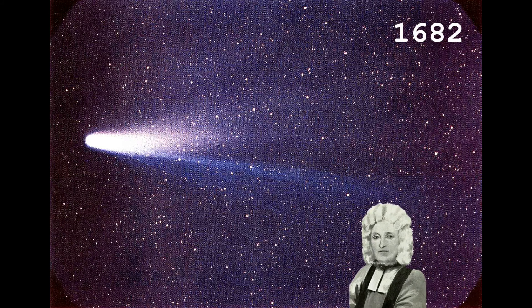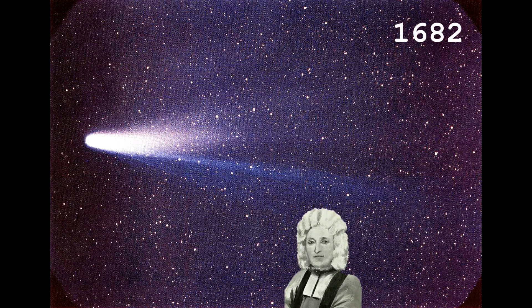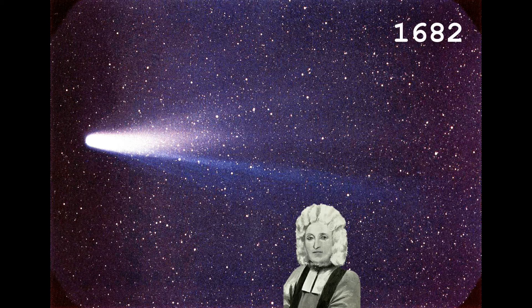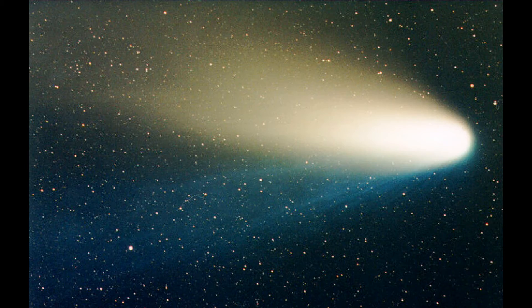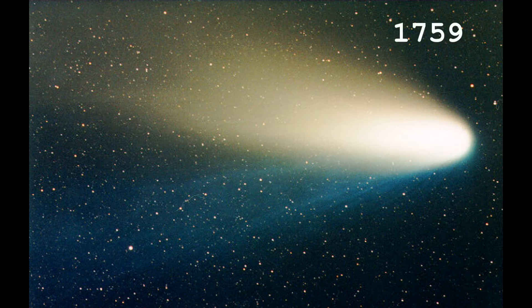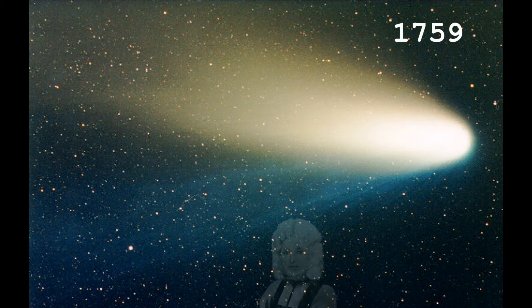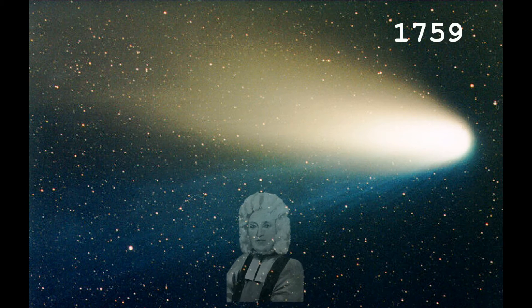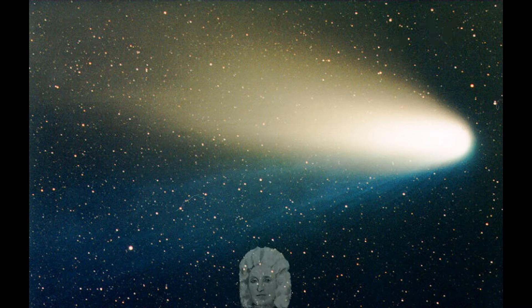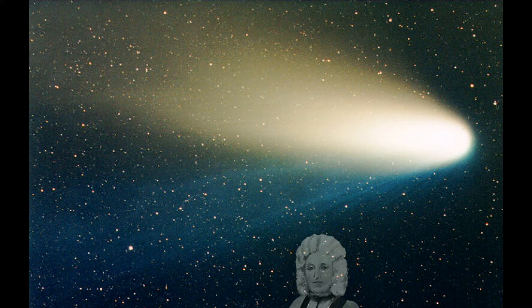In 1682, Edmund Halley saw a comet in the sky and predicted its return in 1759. His prediction was true. The comet was later named Halley's Comet in his honor. That kind of calculation requires good knowledge of polynomial division.